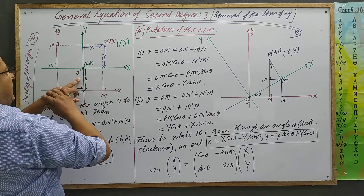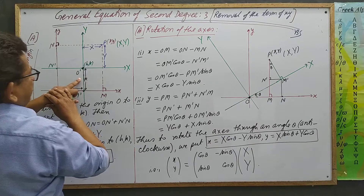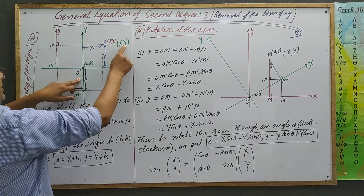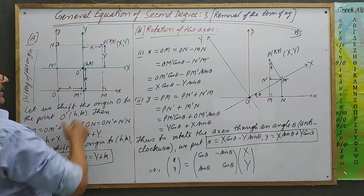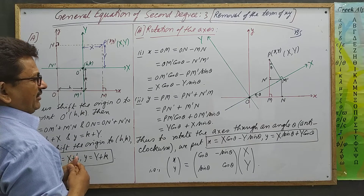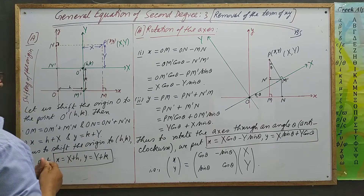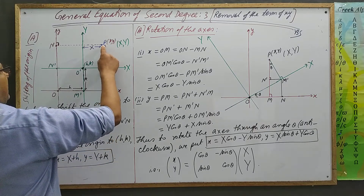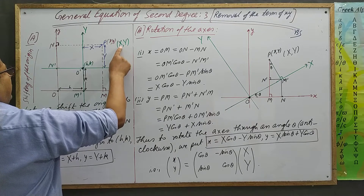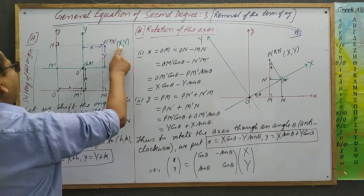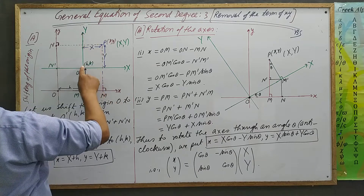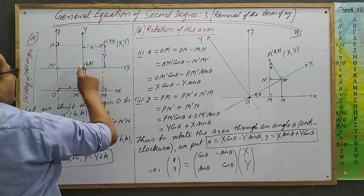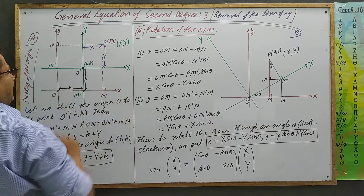We take a point P whose coordinates in the small x-y system are (x, y), and in the capital X-Y system are (X, Y). The x-coordinate is the distance from the y-axis, and the y-coordinate is the distance from the x-axis. So the same point P has coordinates capital X, capital Y as well. Capital X is the distance of this point from the capital Y-axis, and capital Y is the distance from the capital X-axis — shown in blue color.